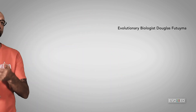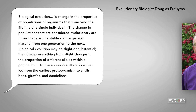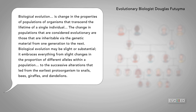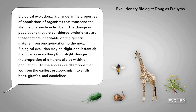Evolutionary biologist Douglas Futuyma once famously offered this view of evolution: Biological evolution is change in the properties of populations of organisms that transcend the lifetime of a single individual. The change in populations that are considered evolutionary are those that are inheritable via the genetic material from one generation to the next. Biological evolution may be slight or substantial — it embraces everything from slight changes in the proportion of different alleles within a population to the successive alterations that led from the earliest proto-organisms to snails, bees, giraffes, and dandelions.